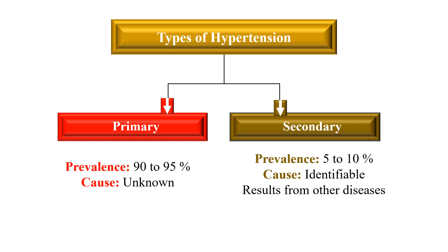About 90 to 95 percent of patients may have primary hypertension, and only 5 to 10 percent of patients have secondary hypertension.